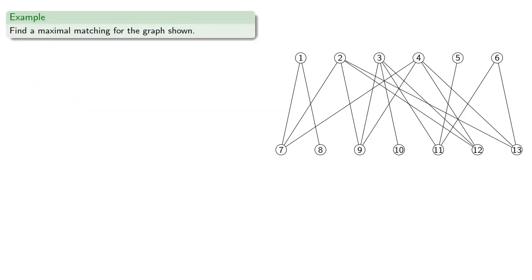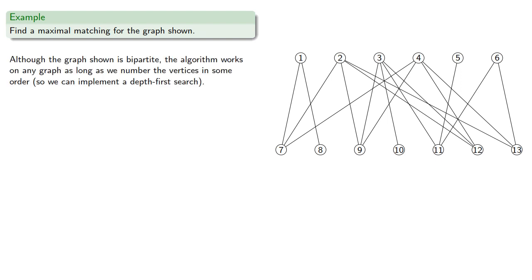For example, let's try to find a maximal matching for this graph. Although the graph shown is bipartite, the algorithm works on any graph as long as we number the vertices in some order so we can implement our depth-first search. We go to vertex 1 and go to the lowest-numbered neighboring vertex, which is 7, and this gives us our first edge, 1-7.